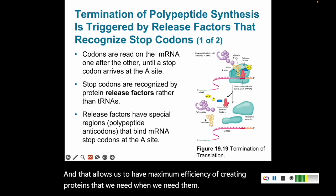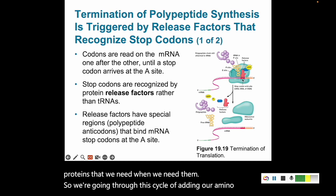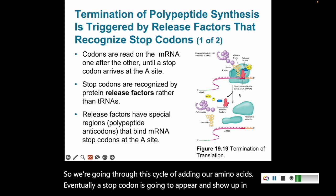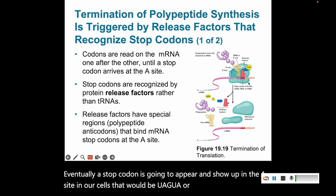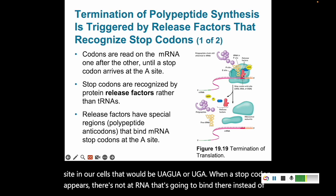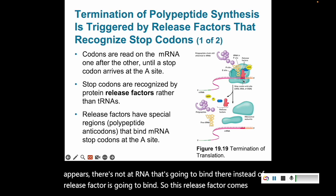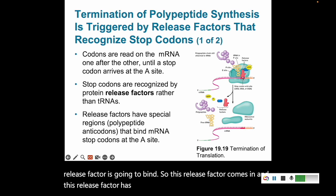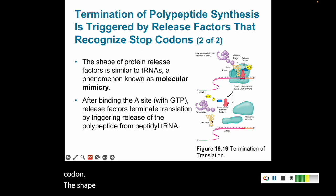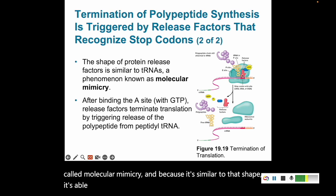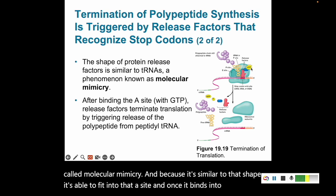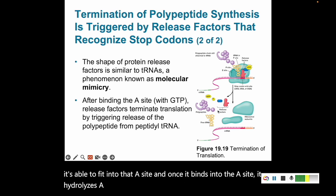As we go through the cycle of adding amino acids, eventually a stop codon appears in the A-site. In our cells that would be UAG, UAA, or UGA. When a stop codon appears, there's no tRNA that binds there — instead, a release factor binds. This release factor has special regions that bind to that codon, and its shape is similar to a tRNA, which is called molecular mimicry. Because of that shape it fits into the A-site, hydrolyzes a GTP, and releases the polypeptide so it can be folded into its three-dimensional functional shape.